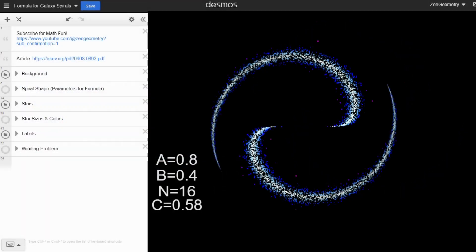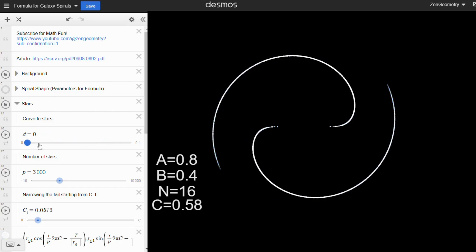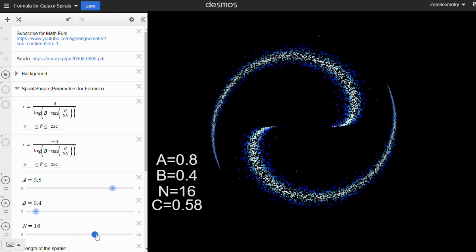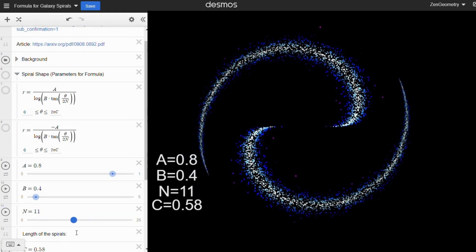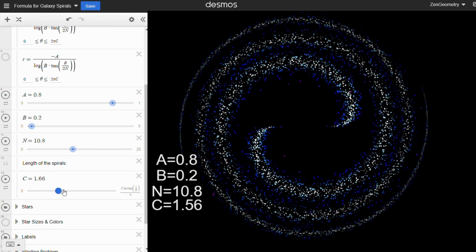Check out the Desmos link in the comments to create your own galaxy spirals. Subscribe for more math wonders. And stay tuned for our next video on how the spirals are formed. You might be surprised to learn that they don't rotate the way you might think.